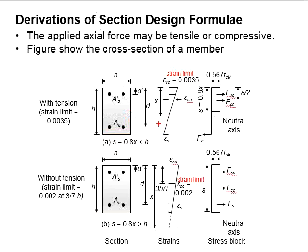When there is existence of tensile strength in the column, the strain limit for compression is 0.0035. It normally occurs at the top of the column with maximum strain.